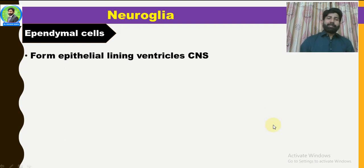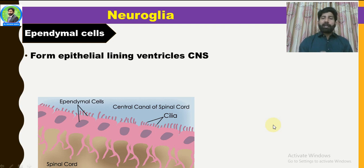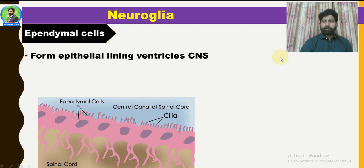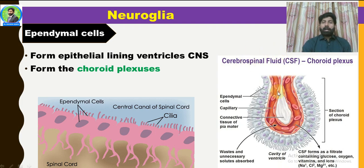The third type is ependymal cells. They form the epithelial lining of the ventricles. The ventricles are the cavities of the CNS — there are five of them: four in the brain and one in the central canal of the spinal cord.